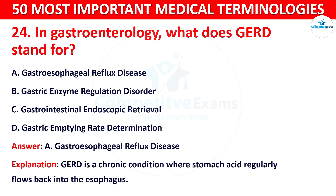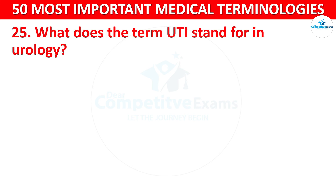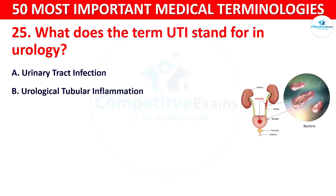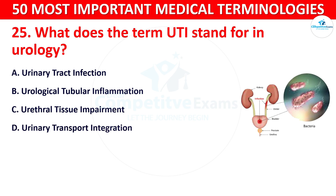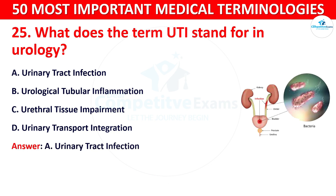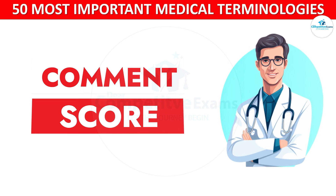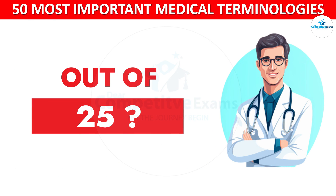Question number 25: What does the term UTI stand for in urology? Your options are: A) Urinary Tract Infection, B) Urological Tubular Inflammation, C) Urethral Tissue Impairment, or D) Urinary Transport Integration. The correct answer is Urinary Tract Infection. UTI is an infection in any part of the urinary system, including the kidneys, bladder, and urethra.